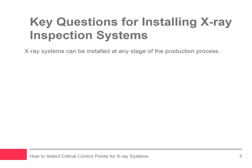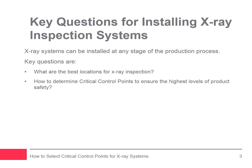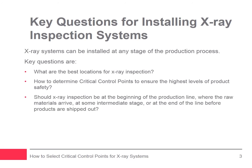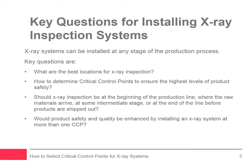Manufacturers typically install x-ray inspection systems at the end of the production line, although systems can be installed at any point during the production process. The key questions are: what are the best locations for x-ray inspection, where are the critical control points to ensure the highest levels of product safety, should x-ray inspection be at the beginning of the production line where the raw materials arrive, at some intermediate stage, or at the end of the line before products are shipped out, and would product safety and quality be enhanced by installing an x-ray system at more than one critical control point?